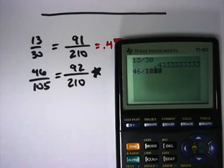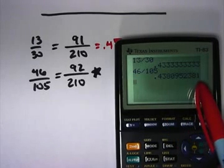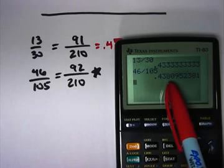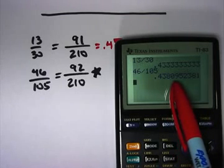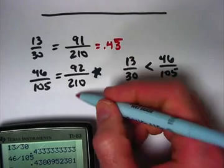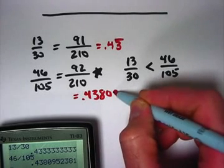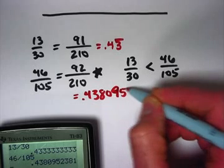And then 46/105. It's a little bit bigger. There we go, 0.4380952381. Looks like maybe, it's hard to tell for sure, but maybe once we get to that 8, then that's repeating the previous 8. I do see that the next number, the next digit is a 1. In reality, it's probably a 0. And then the next one is a 9.